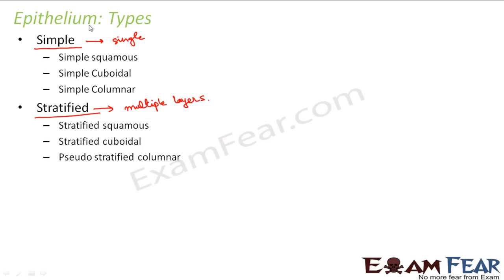Simple epithelium will have a single layer of cells, but stratified epithelium will have multiple layers of cells. On this basis — whether they have a single layer or multiple layers — they are classified as simple epithelium and stratified epithelium. In simple epithelium, we have three types: simple squamous, simple cuboidal, and simple columnar.